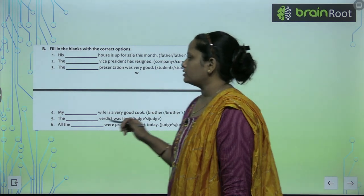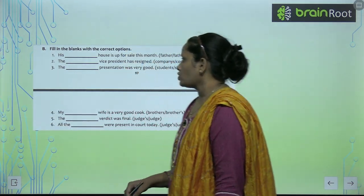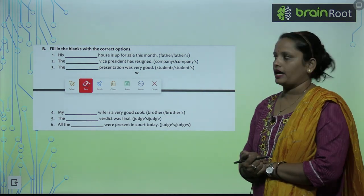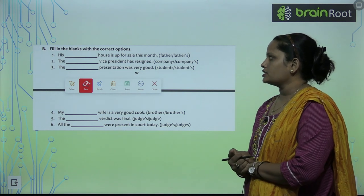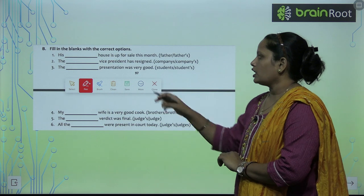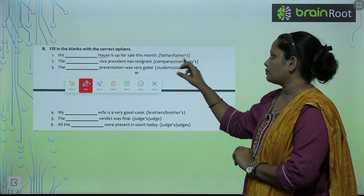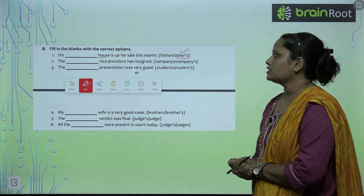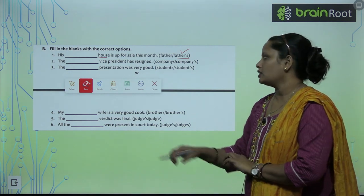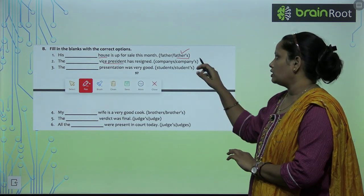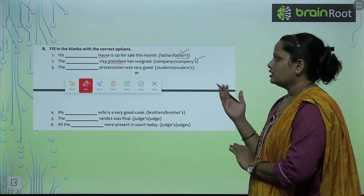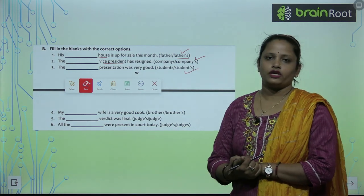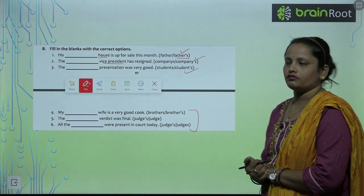Now let's move on to Part B: fill in the blanks with correct options. 'His ___ house is up for sale this month.' — yahan house means ek noun ki baat ho rahi hai, toh yahan aega 'father's' with apostrophe. 'The ___ vice president has resigned.' — companies' with apostrophe. 'The ___ presentation was very good.' — students' with apostrophe. Like this, complete the rest of the questions.